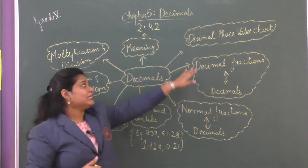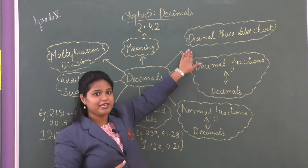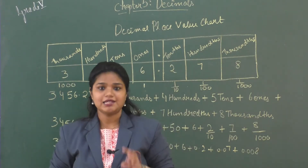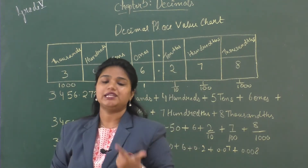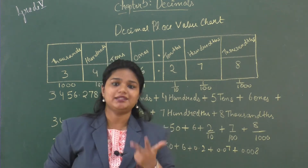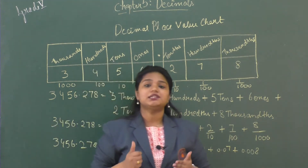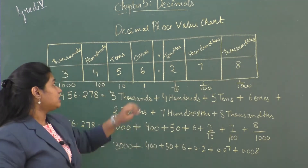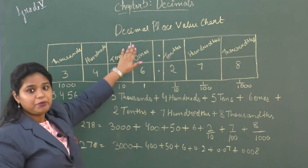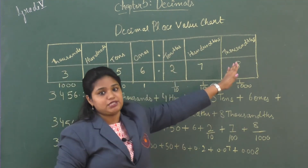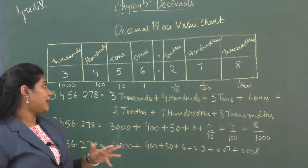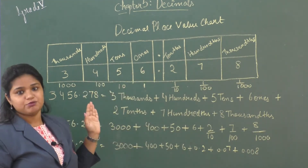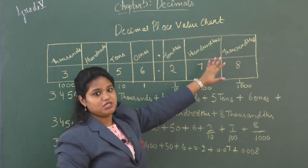Next we learned about the decimal place value chart. We learned that a decimal number has three parts: a whole number part, a decimal point, and the decimal part. Similarly, the decimal place value chart also has three parts. The whole number part is towards the left of the decimal point and the decimal part is towards the right.